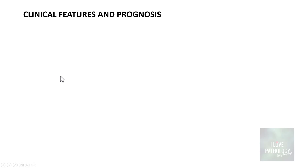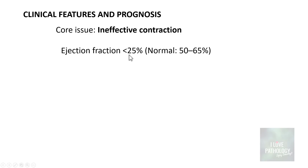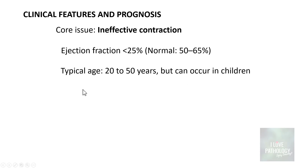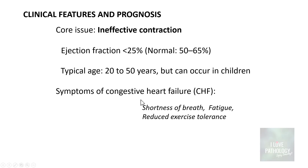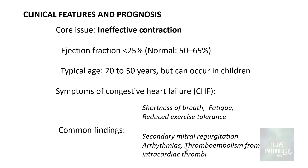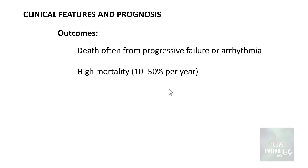Clinically, the core issue is ineffective contraction. The heart is enlarged but contractile function is poor, with ejection fraction less than 25% (normally 50-65%). Typical age of presentation is 20 to 50 years, though it can occur in children. Symptoms include congestive heart failure — shortness of breath, fatigue, and reduced exercise tolerance — along with secondary mitral regurgitation, arrhythmias, and thromboembolism. Mortality is high at 10 to 15% per year.